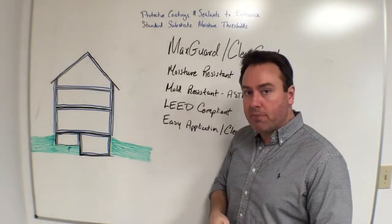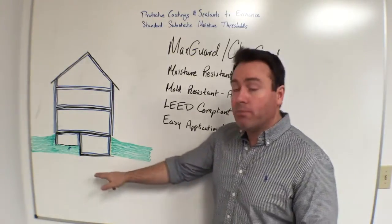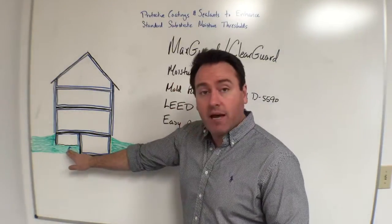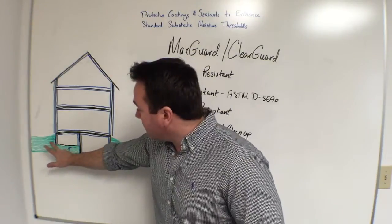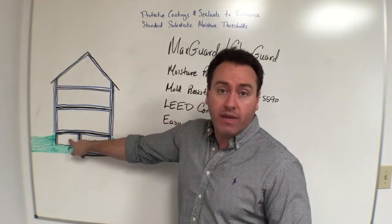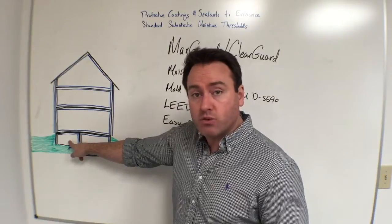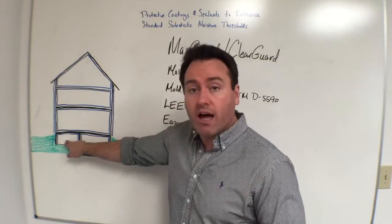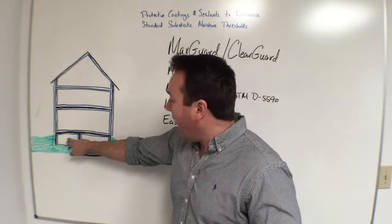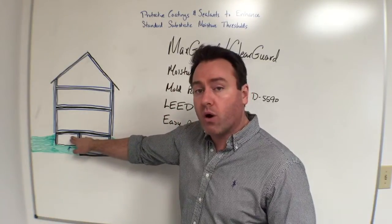The crawl space can be one of the number one places in any structure that has a tendency toward mold and moisture problems. There are really three reasons for that: the moisture release coming directly from the ground itself, the moisture release coming from the outer wall of the crawl space, and the humidity — especially during the summer — that accumulates in the crawl space as well. Those three things exert an awful lot of moisture on a space that has a relatively low air mass, and that's why you get that uptick in moisture content within the subfloor of the crawl space.